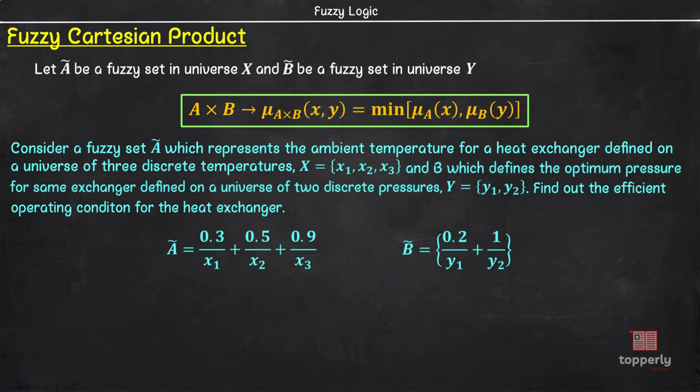As an example, consider a fuzzy set A which represents the ambient temperature for a heat exchanger defined on a universe of three discrete temperatures and B which defines the optimum pressure for the same heat exchanger defined on a universe of two discrete pressures y equal to y1 and y2. So, y1 and y2 are two pressure values. Now, our question is to find out the efficient operation condition for the heat exchanger and we are given sets A and sets B. Also, here you can see that the membership value of temperature x3 in fuzzy set A is 0.9 and we have seen that fuzzy set A represents ambient temperature. It means that x3 is a more ambient temperature than x2 because x3 has a membership value of 0.9 compared to 0.5 for x2.